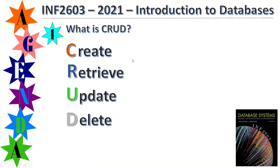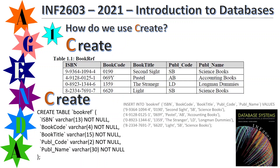CRUD is an acronym for Create, Retrieve, Update, and Delete, and those are the four important things that databases do. First you need to create some tables and a database, and then the next things are to retrieve, update, and delete.